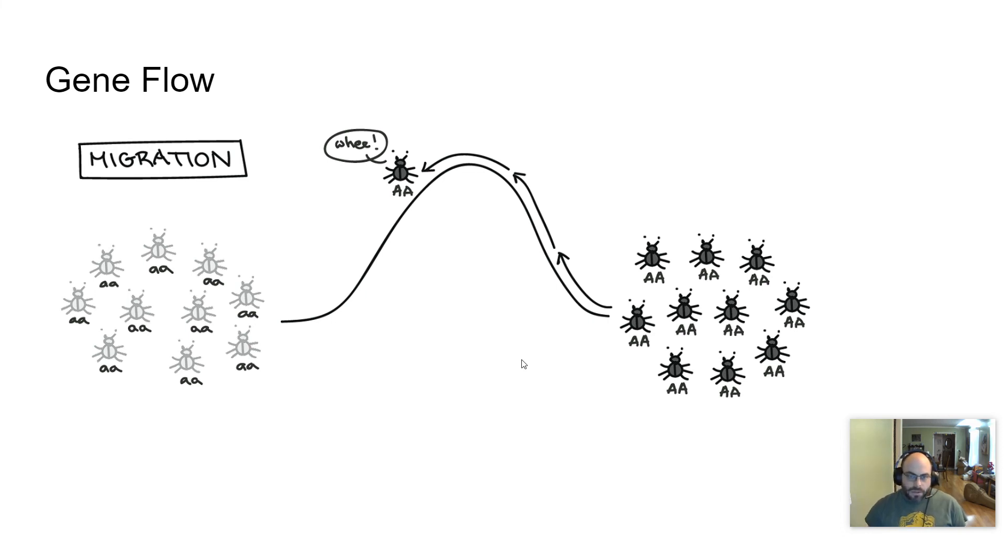Just by introducing the dominant allele, which is always going to express itself. The recessive allele won't go away. We're going to talk about that as we talk about Hardy-Weinberg equilibrium. But you will see more and more prevalence of that dominant allele, particularly if the dominant allele is selected for by nature.